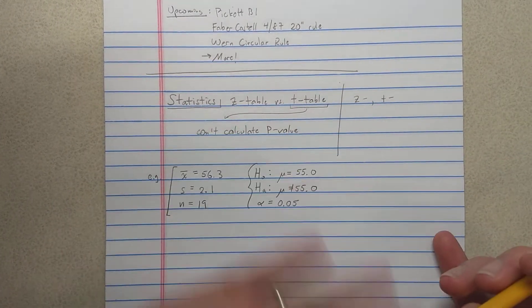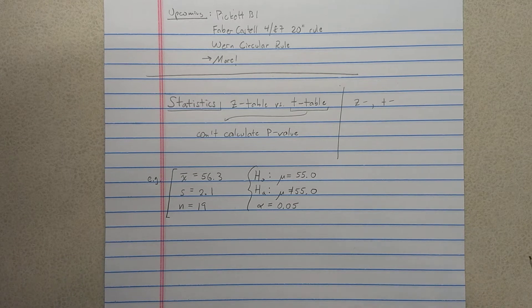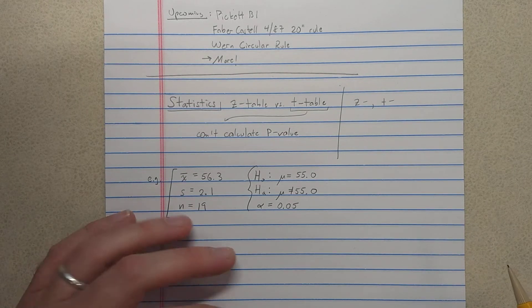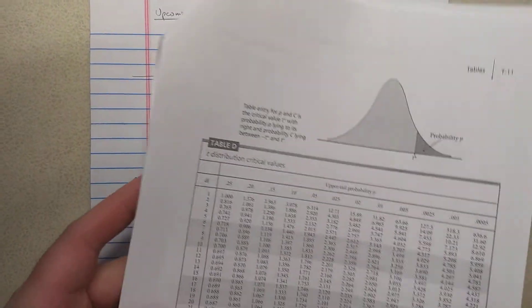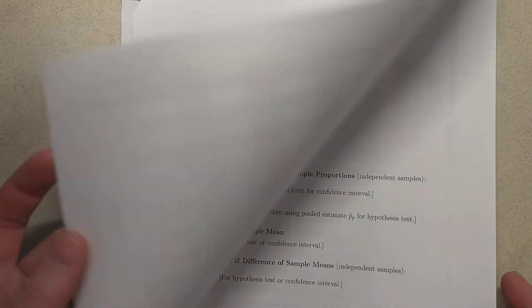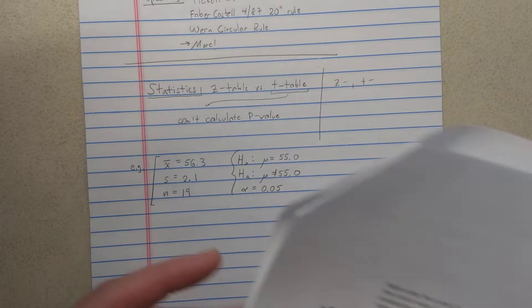It's not possible for us to really give tests in a computer lab, which would be really cool. And so one option is you still do the very ancient thing of giving students a t-table and a z-table to use on their tests.